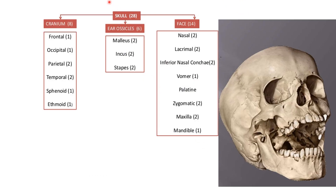The skull in total contains 28 bones. The cranium — the head part — contains 8 bones: frontal (1), occipital (1), parietal (2), temporal (2), sphenoidal (1), and ethmoidal (1). Then come the ear ossicles — the bones inside the ears: malleus, incus, and stapes. The facial bones include nasal bones, lacrimal bone, inferior nasal concha, vomer, palatine, zygomatic, maxilla, and mandible.